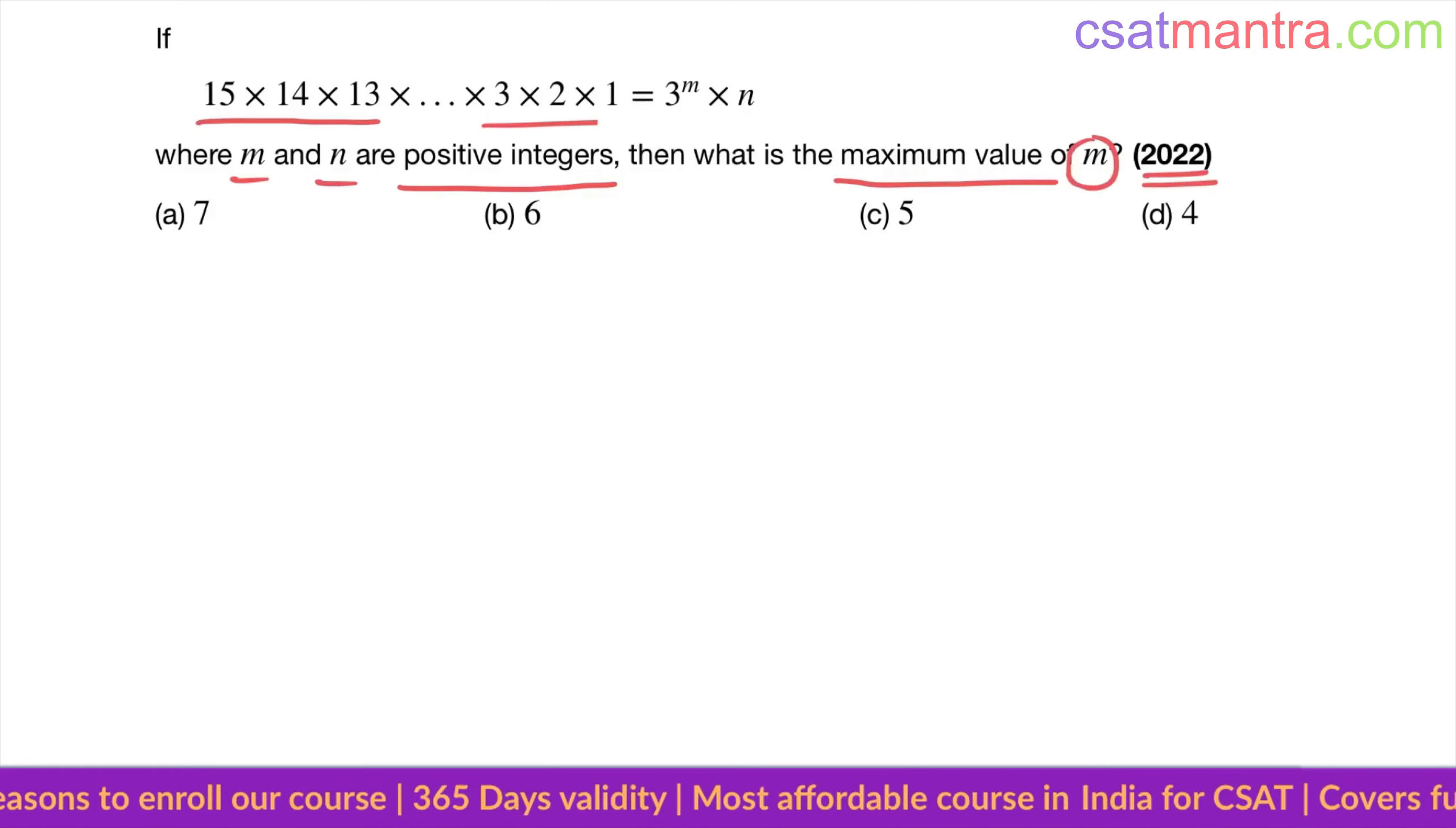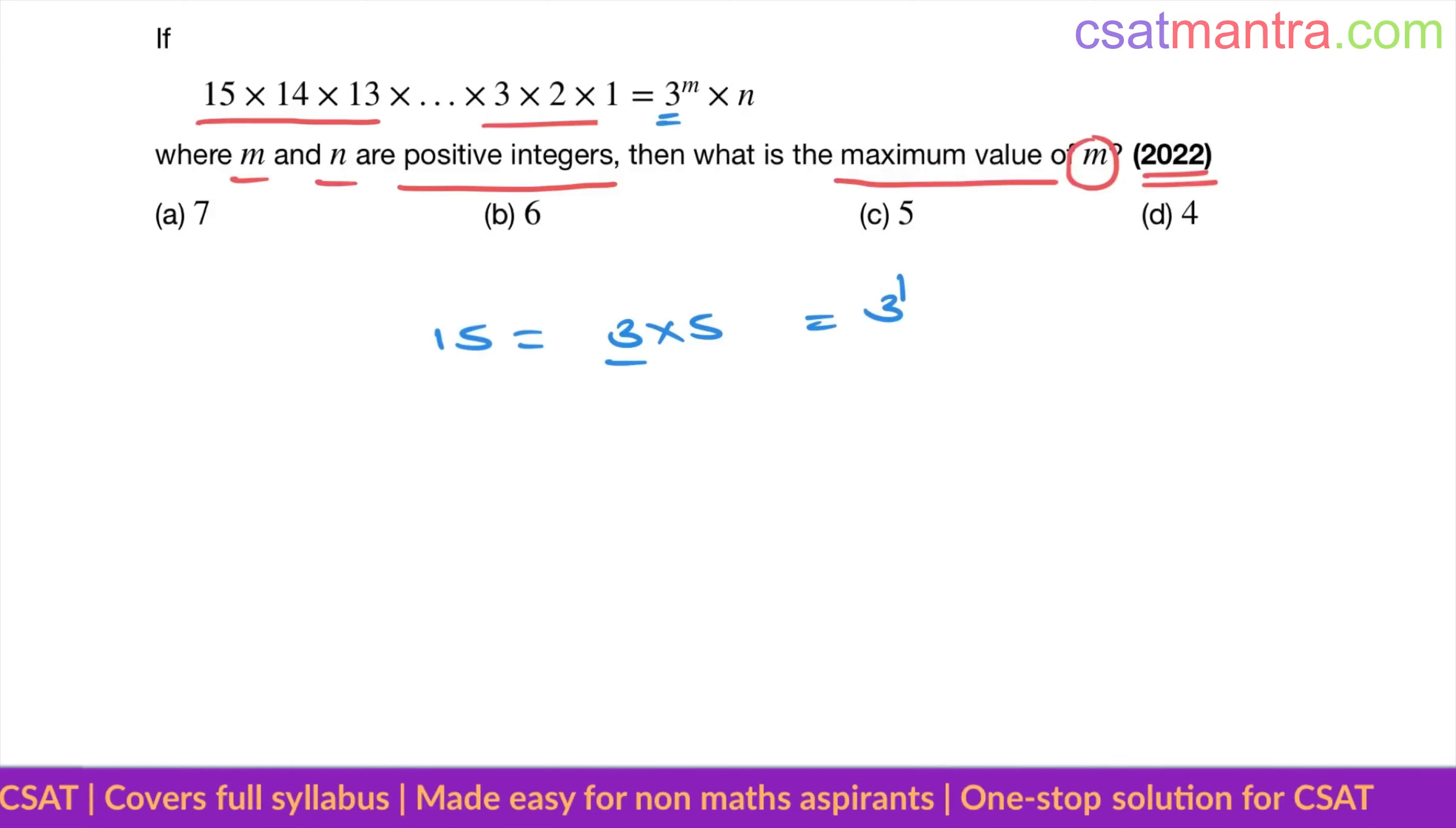See, m is the power of this base 3 here. So on the left-hand side, we have to see which are all the factors of 3. 15 = 3 × 5, here we have one 3, that's 3^1. 14 is not a factor of 3.